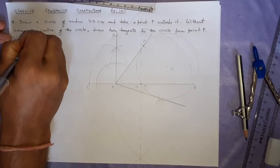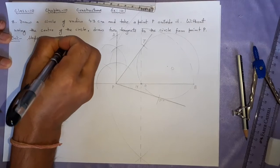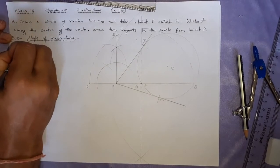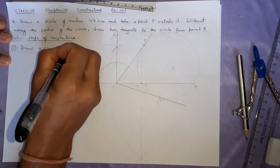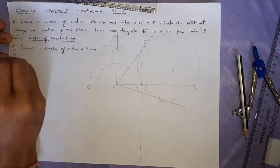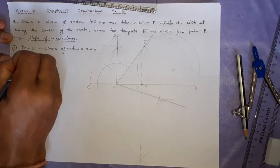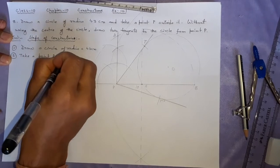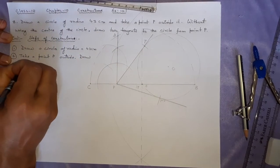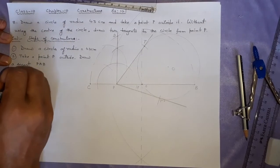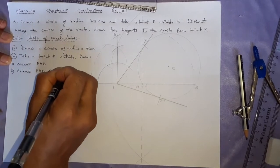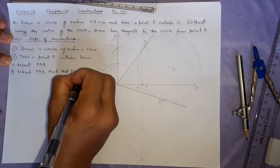Number 1, draw a circle of radius equal to 4.3 centimeter. Number 2, take a point P outside. I will continue this. Draw a secant PAB. Number 3, extend PAB such that PA equal to PC.